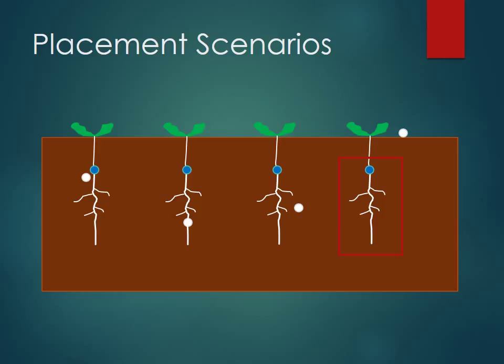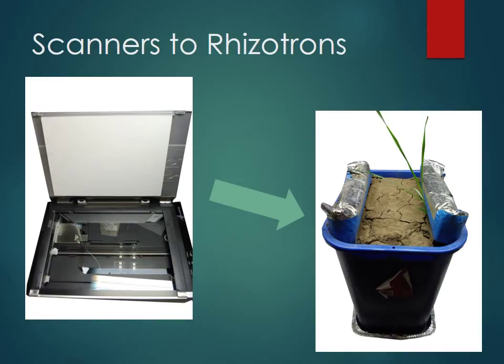A lot of the work surrounding these different fertilizer application methods has been focused on emergence, stand establishment, and yield — and not so much on the roots and what's happening underground. What we're looking at is how the fertilizer band and the roots interact. We do this by waterproofing office scanners and placing them in the soil, then planting a seed next to them so you can watch the root grow down. This gives you a rich dataset in both time and space.